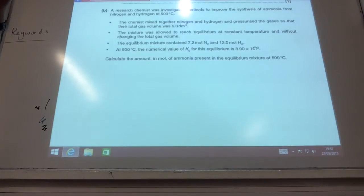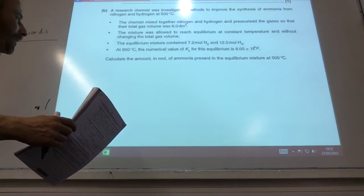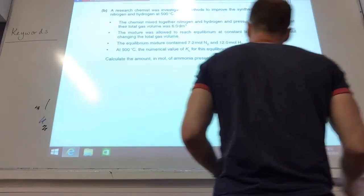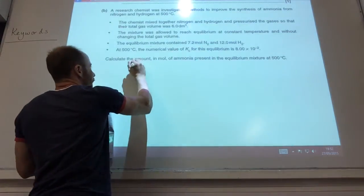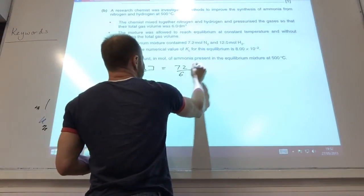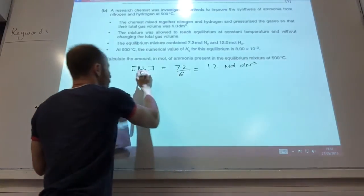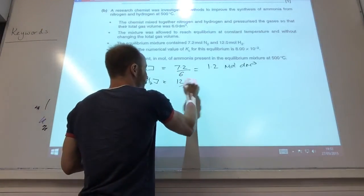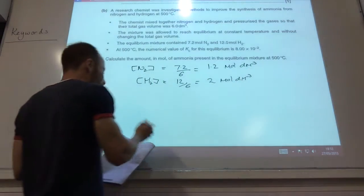Oh right, this is quite an interesting one. They want me to calculate the amount of moles of ammonia present in the equilibrium mixture. So I'm going to use KC in some way, because they've given it to me here. So, first of all, they've told me how many moles of nitrogen and hydrogen are. I need to first of all work out my concentration of nitrogen. 7.2, the volume is 6 decimetres cubed. So that gives me 1.2 moles per decimetre cubed. Concentration of hydrogen is going to be 12 divided by 6, which is 2 moles per decimetre cubed. I then need to bang it into KC.